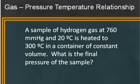This is a pressure-temperature relationship problem. A sample of hydrogen gas at 760 mmHg and 20 degrees Celsius is heated to 300 degrees Celsius in a container of constant volume. What is the final pressure of the sample?